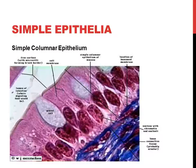There is also a ciliated type of simple columnar epithelium. Instead of microvilli, it has longer motile cilia which can move and beat, moving things across the surface. This lines small bronchi in the lungs so the cilia can move mucus up and out of the respiratory system. It's still simple — just one layer of columnar cells — even though it's a tall, thicker membrane.